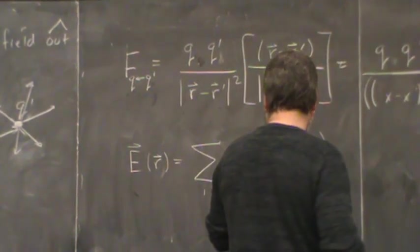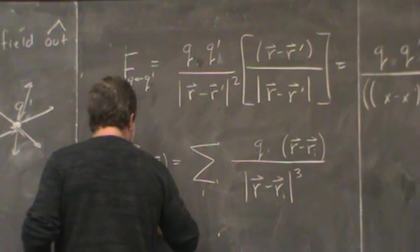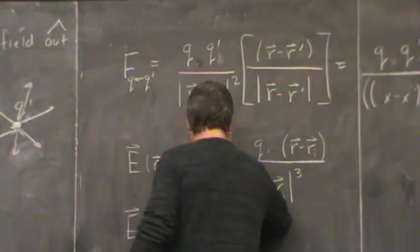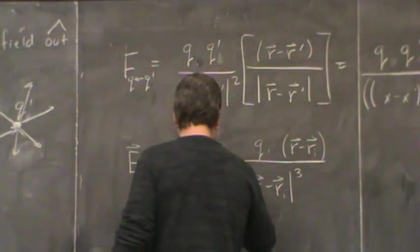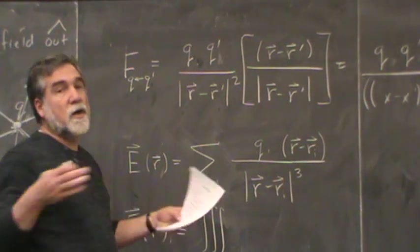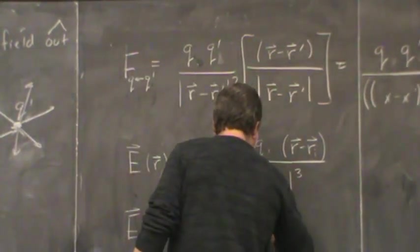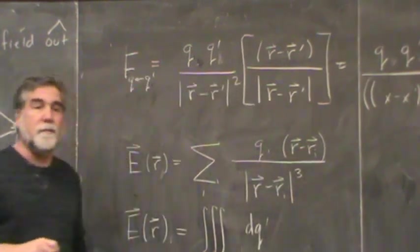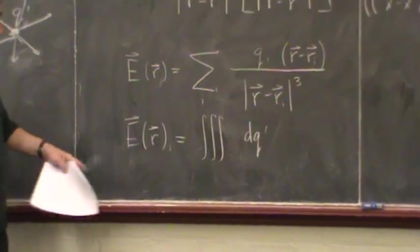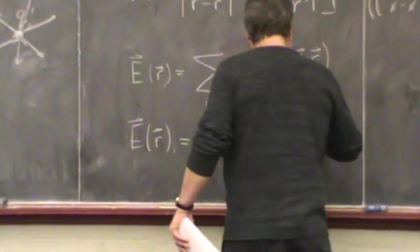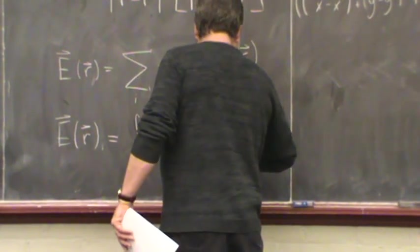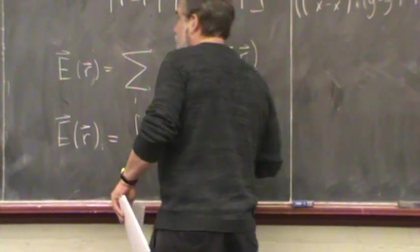So the electric field due to a collection of charges — or actually a continuous distribution of charges distributed throughout space — is going to be the integral in three dimensions over all the charge distributed throughout space. I'm going to write dq prime for the moment, but I'll be a little more careful about that. That's all of the charge except for the charge at the point I'm concerned with, because I'm calculating the field. And in here I'll put r minus r prime over r minus r prime cubed.